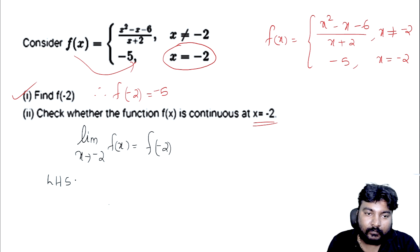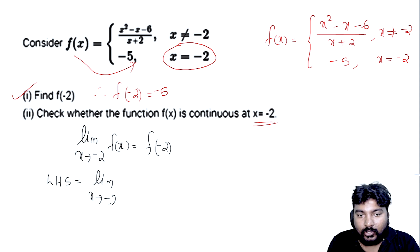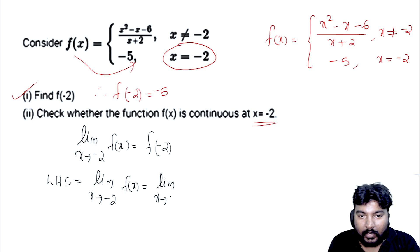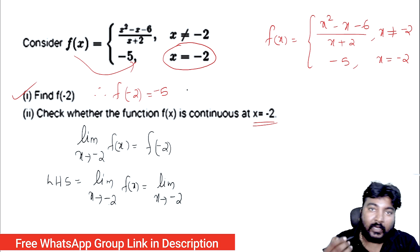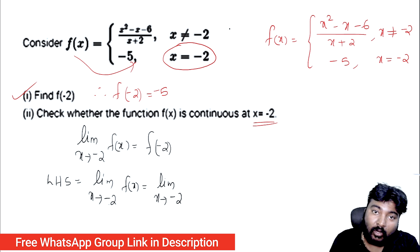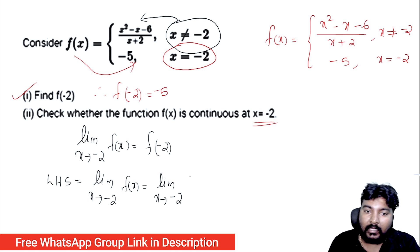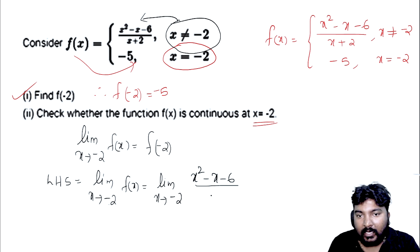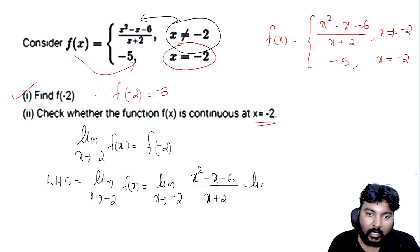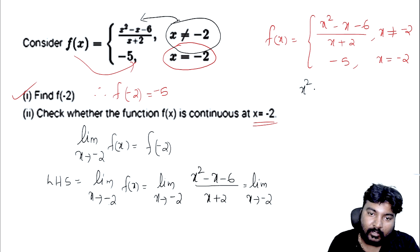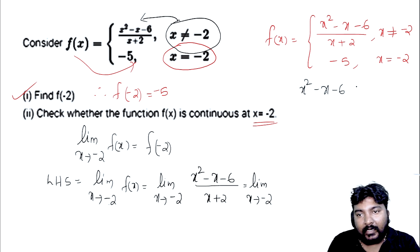Left hand side: limit as x tends to minus 2 of f(x) equals limit as x tends to minus 2. We substitute minus 2. The expression is x² minus x minus something divided by x plus 2. So this is equal to limit x tends to minus 2. We need to factorize x² minus x.